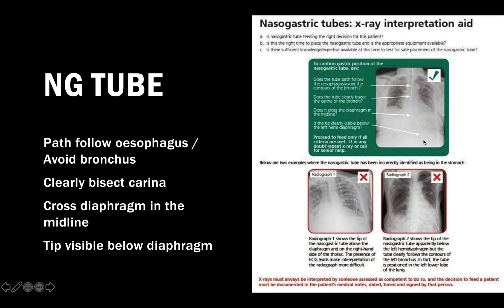In the examples shown: one NG tube fulfills all four criteria; another is off the midline with an unclear tip; another goes away from the midline into the abdomen - and in fact this one is following the left main bronchus and is in the lower lobe of the left lung. That's a catastrophic situation. The tip is still in the chest, not below the diaphragm, because the diaphragm is a dome. All four criteria must be met before starting feeding.